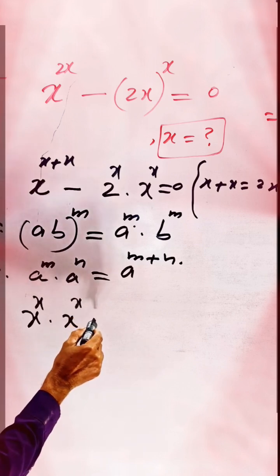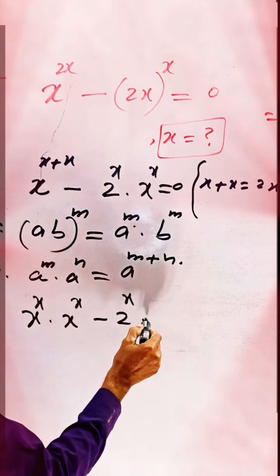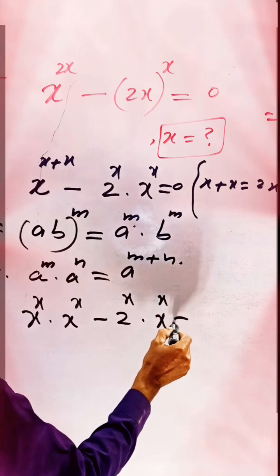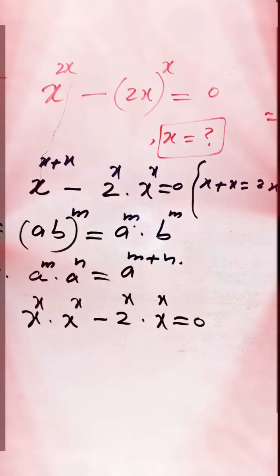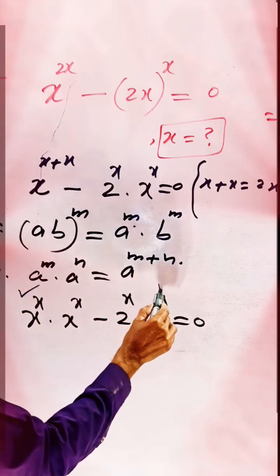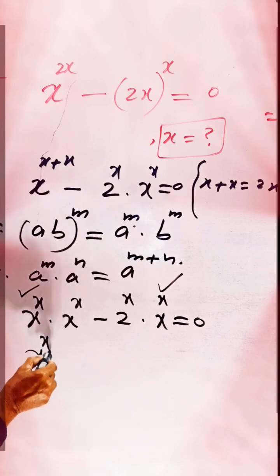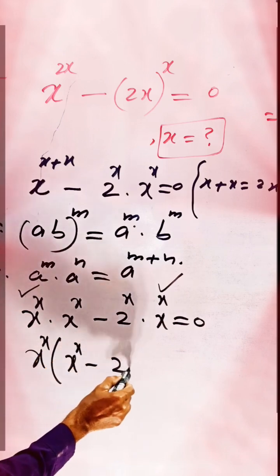So x to the power of x times x to the power of x minus 2 to the power of x times x to the power of x equals 0. Now we are taking common this result, so x to the power of x is common.